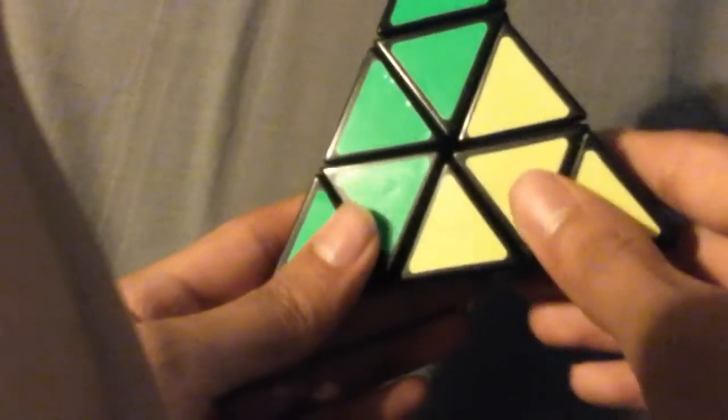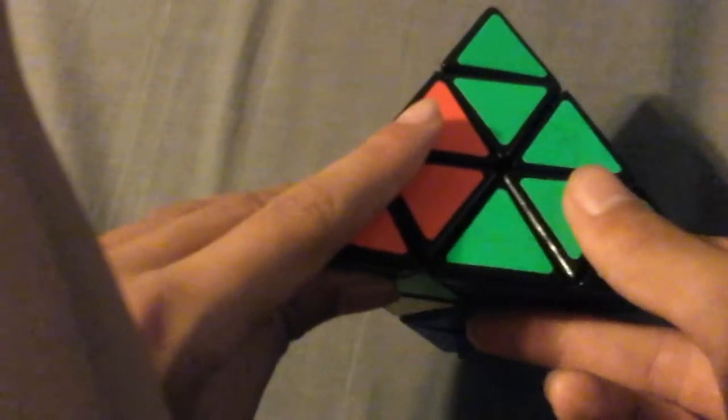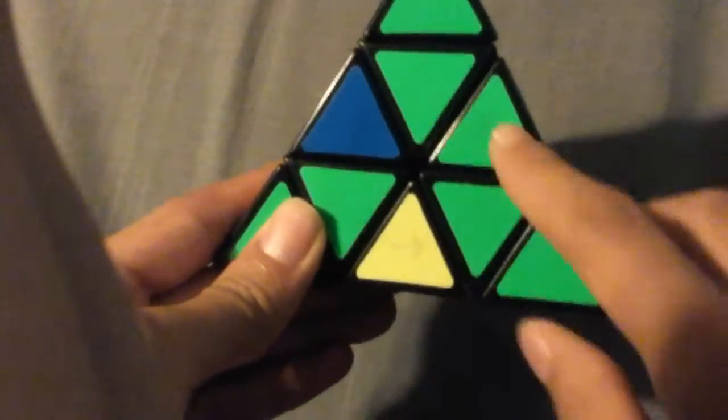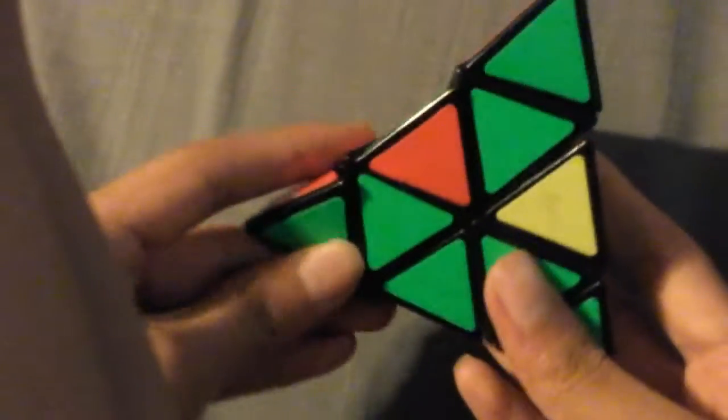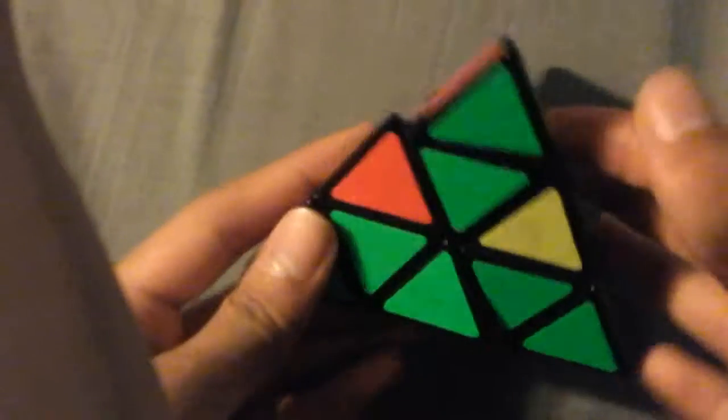So, you go turn this way, this way, that way, that way, and you turn this to here. So it's this way, that way, this way, that way. So it's like an algorithm for pyramids.